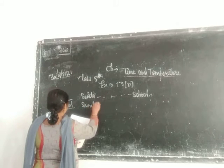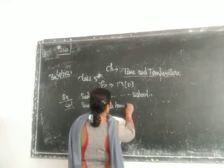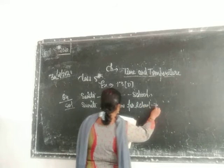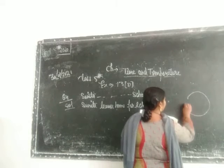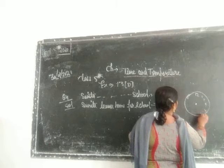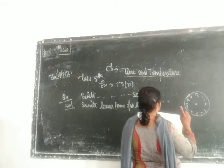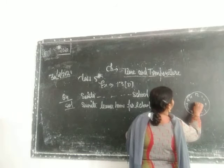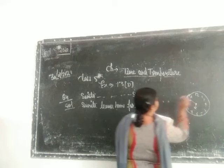Sunita leaves home for school at 10 minutes to 7. This is a clock — 10 minutes to 7 means it is here, it means it is 6:50.